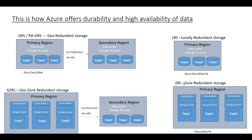Zone redundant storage is on a much higher level than locally redundant storage because the data is stored in different data centers within the same primary region. So even if there is an issue with a single data center, you have the option to recover your data from the other two data centers.